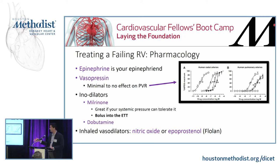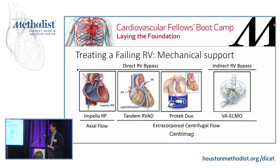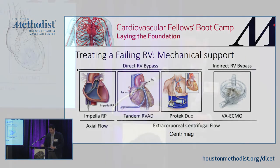Finally, we have inhaled vasodilators like nitric oxide and epoprostenol (Flolan). Nitric oxide is more potent but more expensive and comes in a bulky delivery system. Flolan is not quite as potent, cheaper, easier to transport, though it requires a filter because of its mixture. We use nitric because we like to spend money. And if none of that works, there are mechanical support options for the RV that we don't have time to go through — but you have a lot of options.